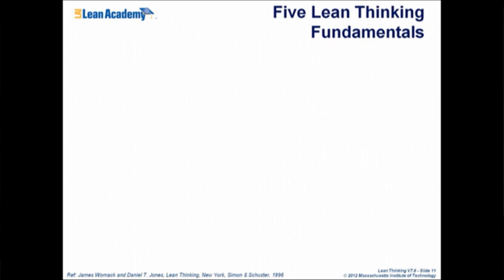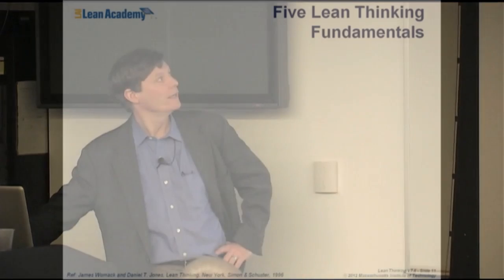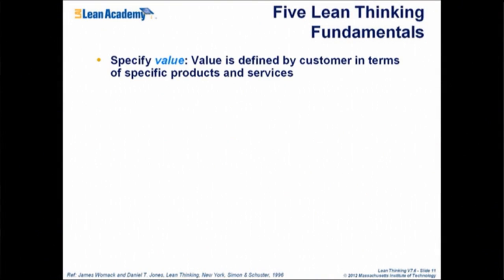We're going to get into the five lean thinking fundamentals. Earl introduced you earlier to the origins of lean — how it came out of a study of Japanese practices by Jim Womack and his team. Womack and Jones wrote a book in 1995 where they basically took the concepts of the Japanese system and captured them not so much as a system, but as a way of transforming existing processes into better ones. That's kind of the essence of lean as practiced in North America and Europe.